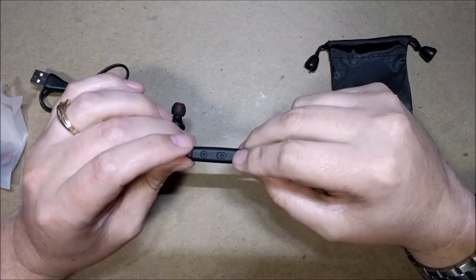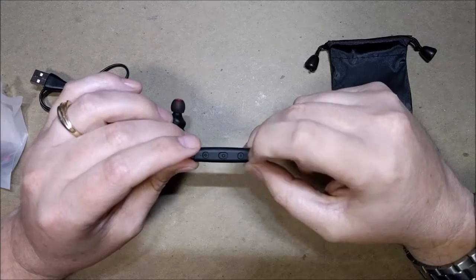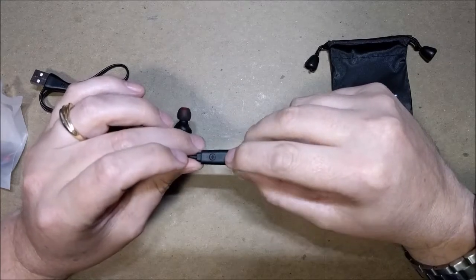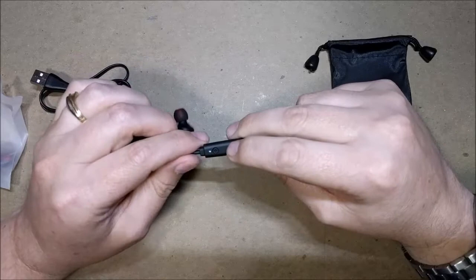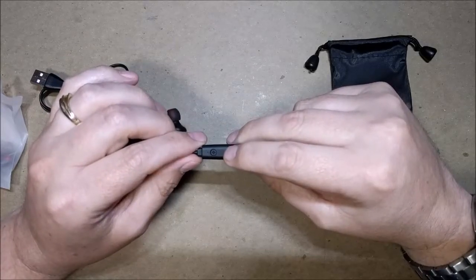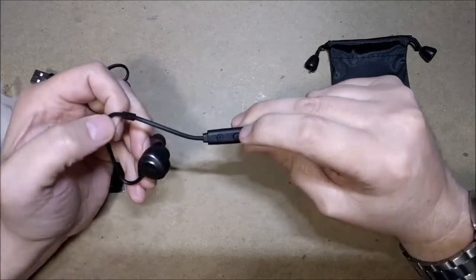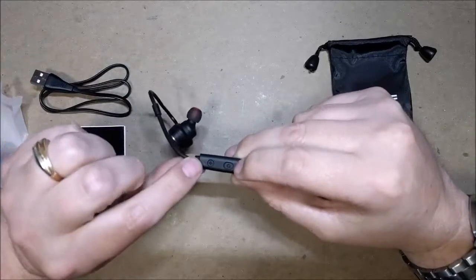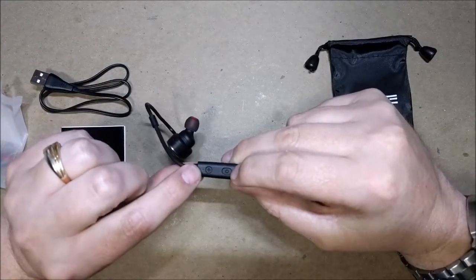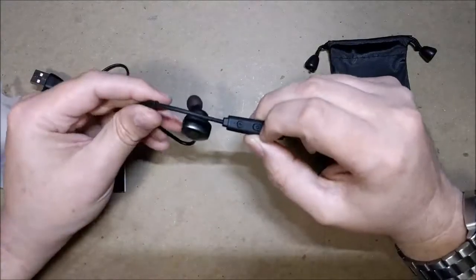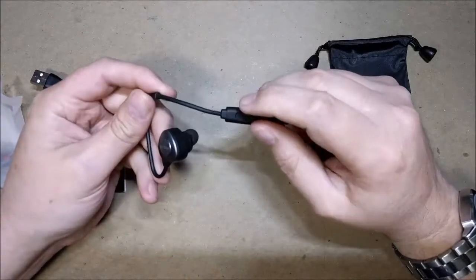Then you have your main button here which you press and hold for about four seconds to turn on and off. To pair you just continue holding after it turns on and it goes into pair mode. You can see the LED light there, it'll blink red and blue indicating. There's also a nice audible sound telling you when it's turning on and also pairing, so you do get an audio cue there which is handy.